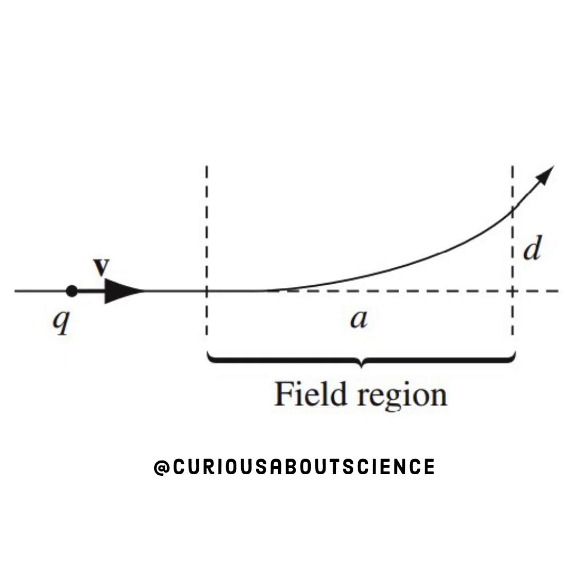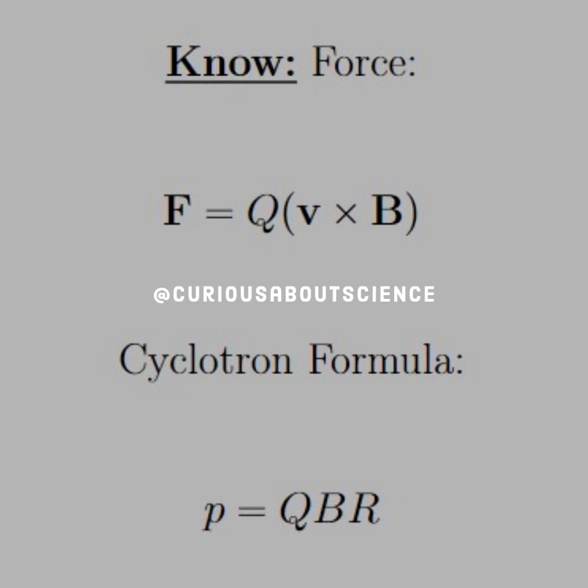So let's look at the diagram. We see that on the left hand side we have the particle Q with the velocity pointing right going into the field region where it deflects. You see how it deflects upward, almost in a circular path, from the runway A up to height D.